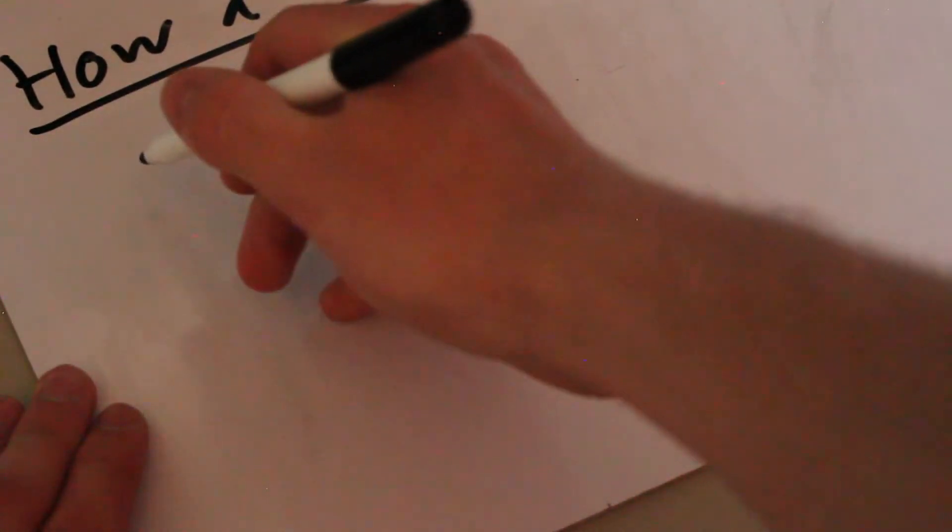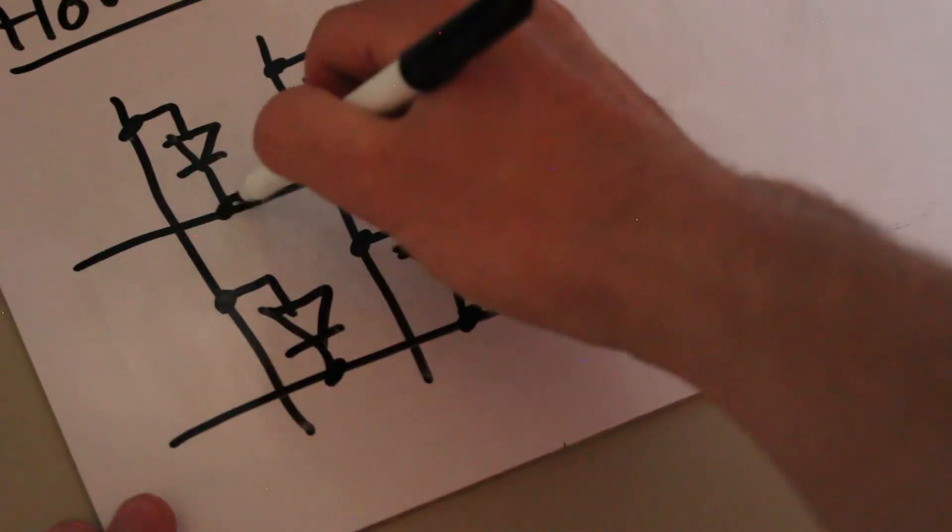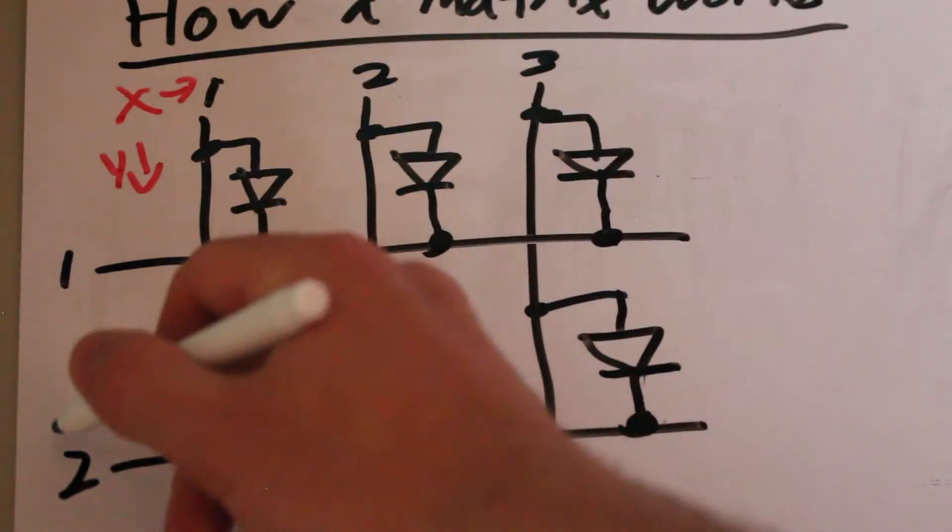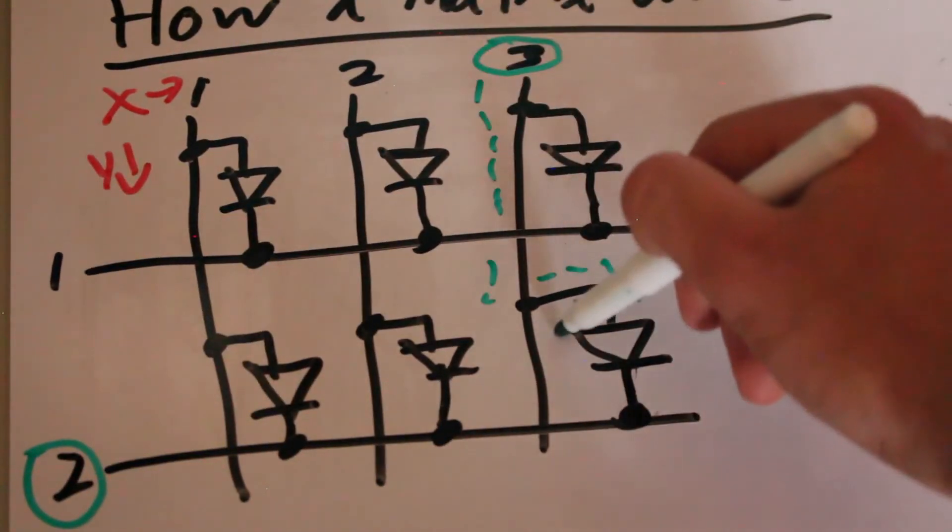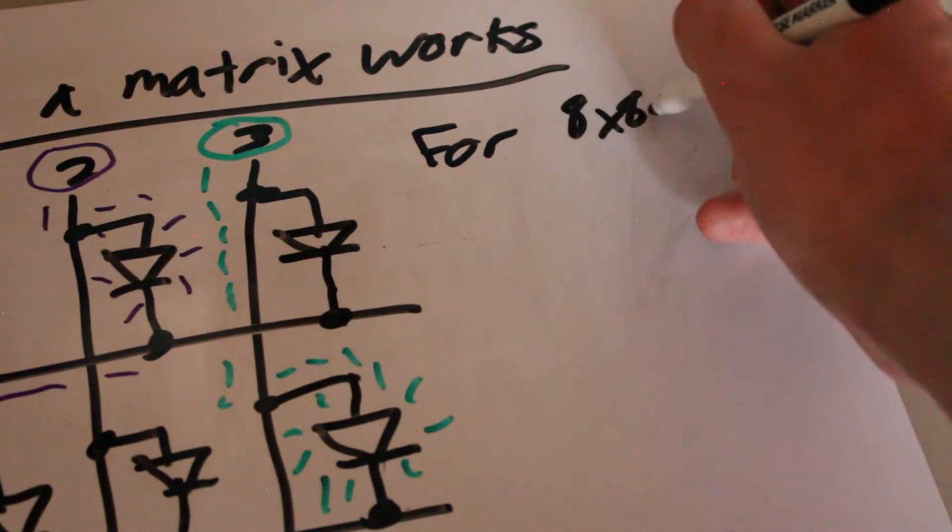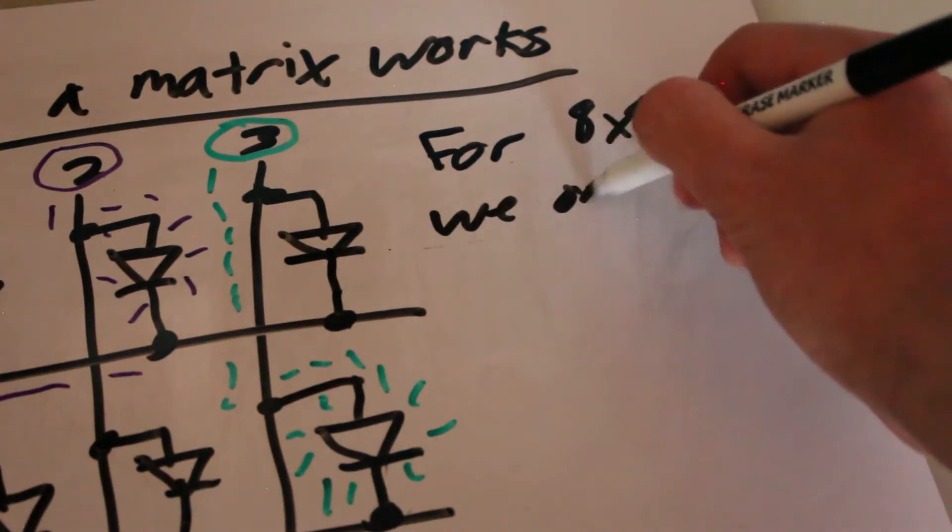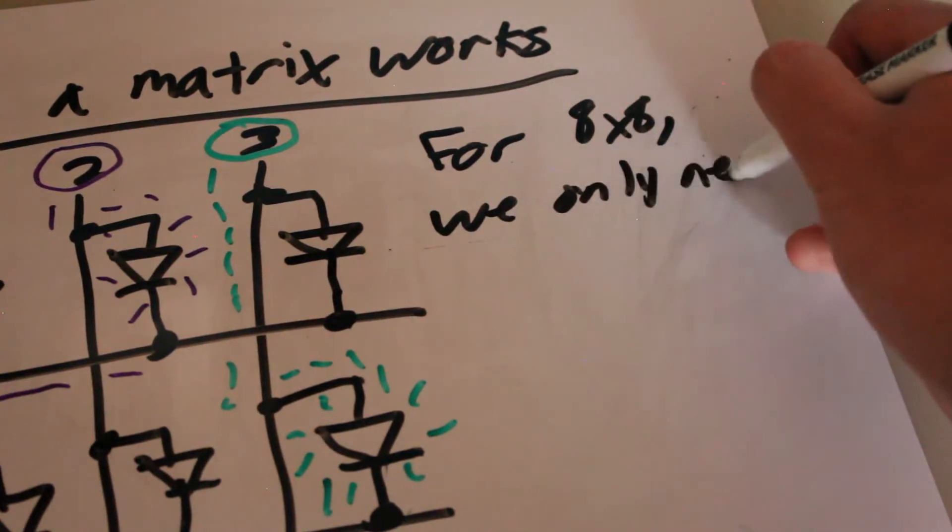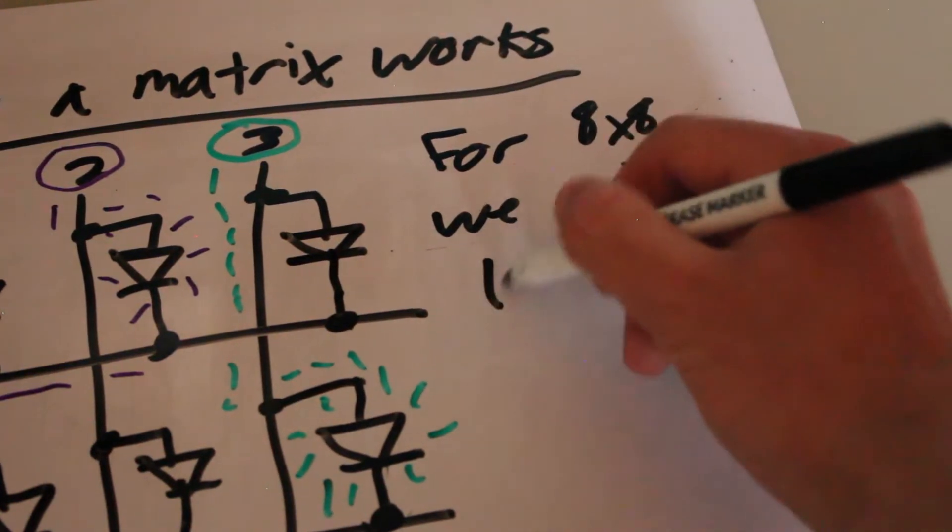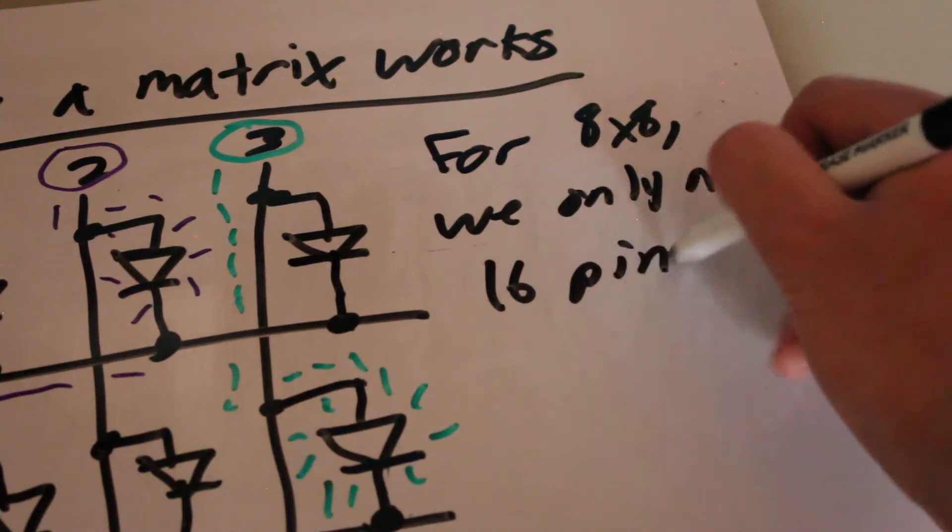A matrix works by putting the LEDs into rows and columns. We are then able to select both a row and a column to select a specific LED. Because we're only selecting the rows and columns, this reduces the pin count from 64 down to 16, with 8 pins being dedicated to the rows and 8 pins being dedicated to the columns.